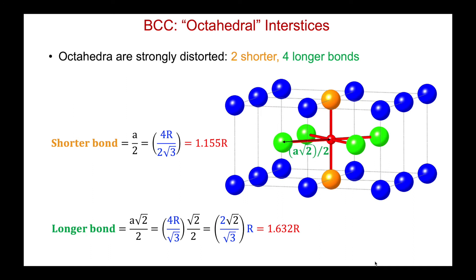But again, its occupancy is going to be constrained by the shorter bond. If an atom goes into that position, can it accommodate such a short bond and such a small radius ratio?